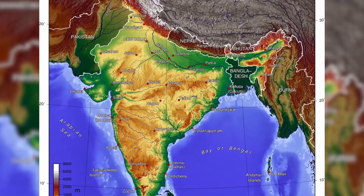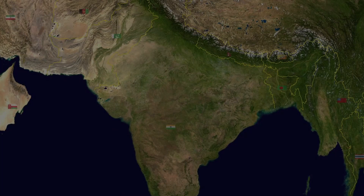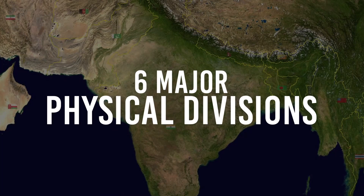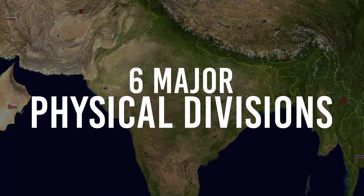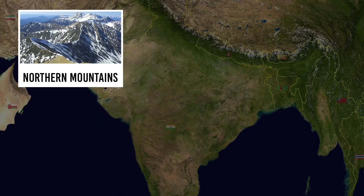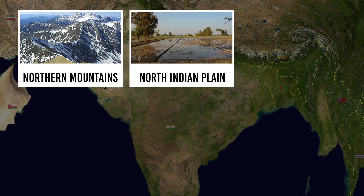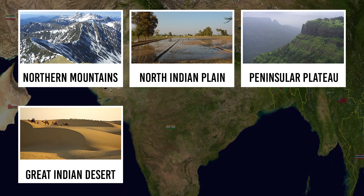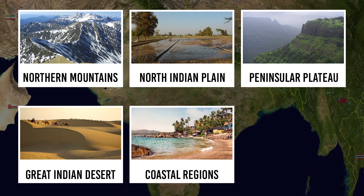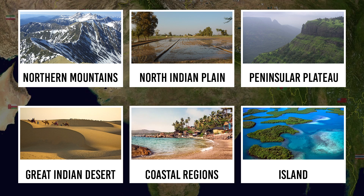Let's get started. India can be divided into six major physical divisions: the Northern Mountains, the North Indian Plain, the Peninsular Plateau, the Great Indian Desert, the coastal regions, and the islands.